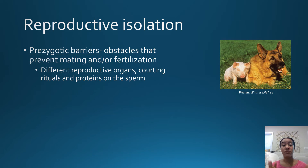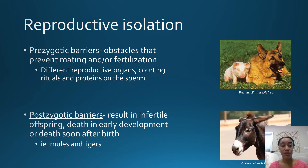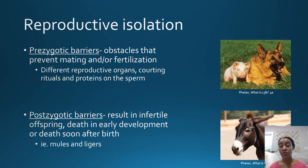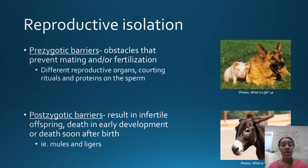You also have postzygotic barriers, and these are barriers that result after fertilization has occurred. An example of this is infertile offspring. A mule, as well as ligers, are viable offspring but they are infertile, so they will not be able to pass on their genetic traits to any offspring — they are not considered a separate species. Another postzygotic barrier is death in early development, where many hybrid animals between two separate species will die very early in development due to issues with their chromosomes.